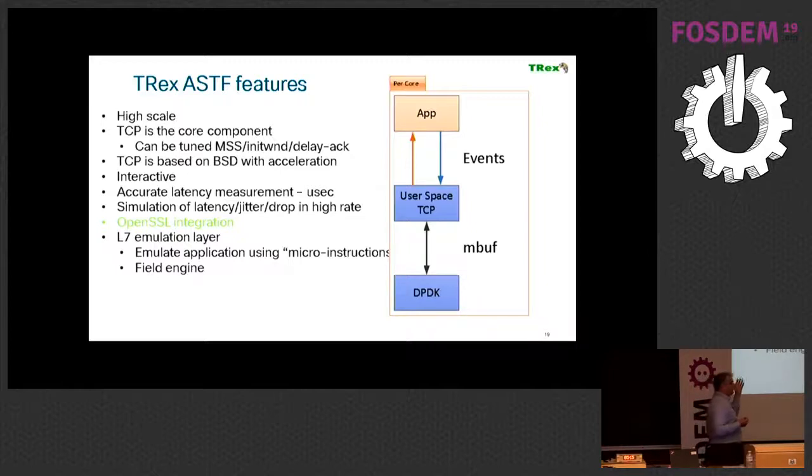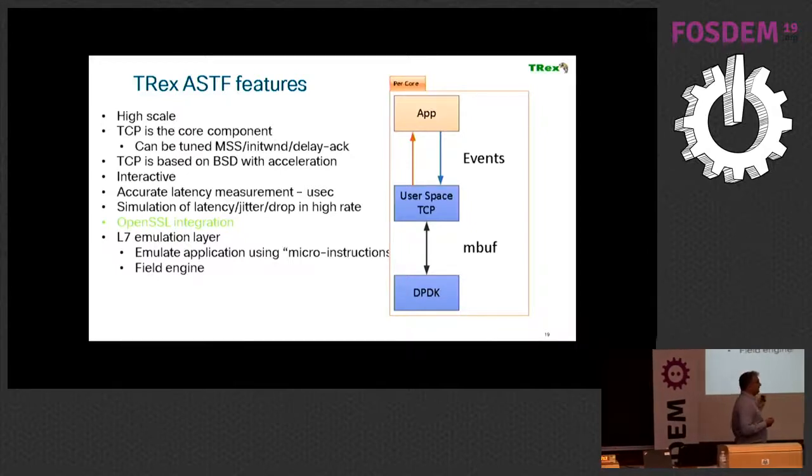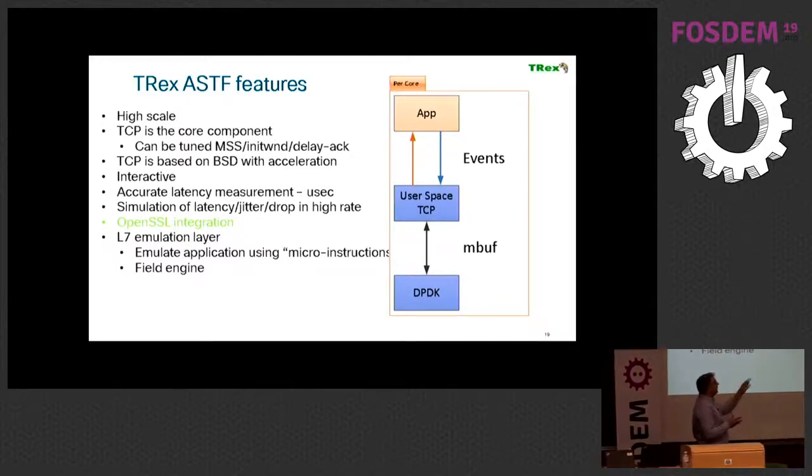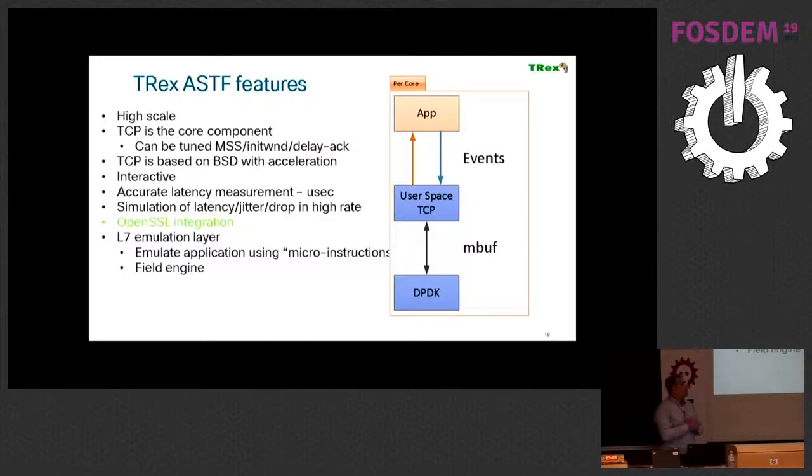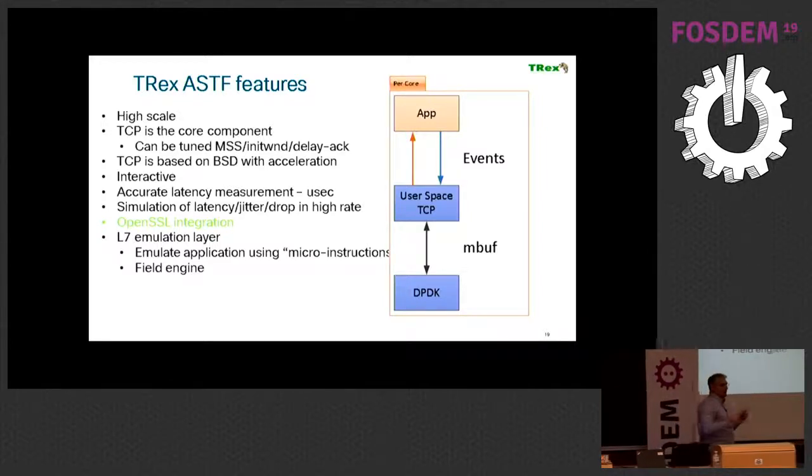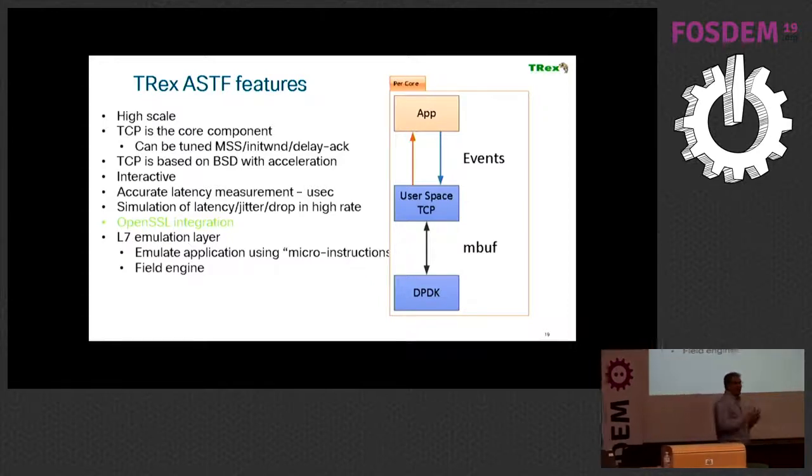We took a BSD, a native BSD stack, and we changed it in a way that it would be multicore. Every instance of the thread had its separate stack. Through the API, through the control plane, we separated the application to each core. We managed that. From the perspective of the user, you see one box that does one thing.